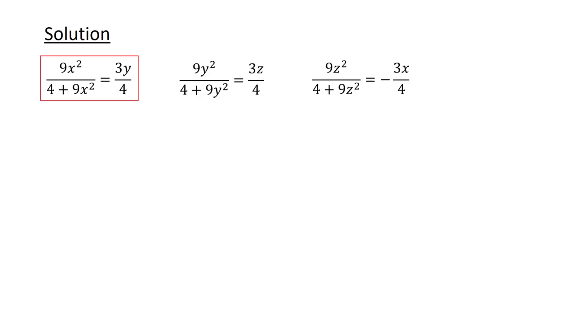First, let's look at this equation. By taking reciprocal to both sides of the equation, and then splitting the left-hand side to two terms, we end up with 4 over 9x² plus 1 is equal to 4 over 3y.